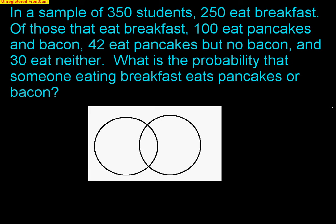Let's make sure that we understand this. The Venn diagram here represents the students that eat breakfast. If you are in this area, you eat breakfast. We were told that 100 eat pancakes and bacon. So let's have the left circle be for pancakes, and let's have the right circle be for bacon.